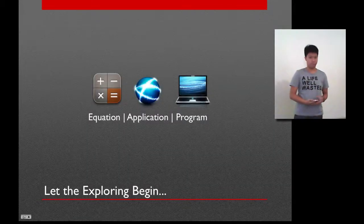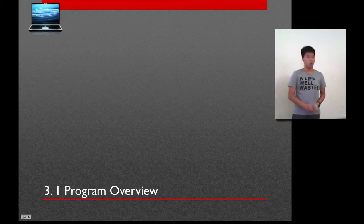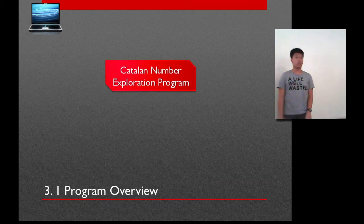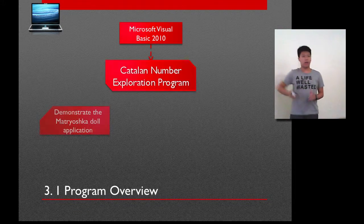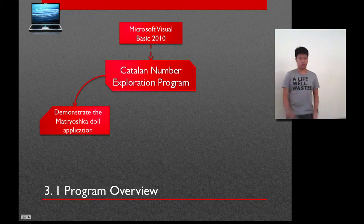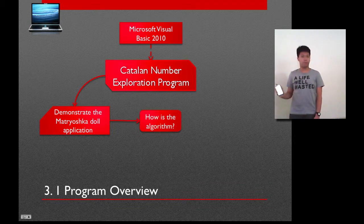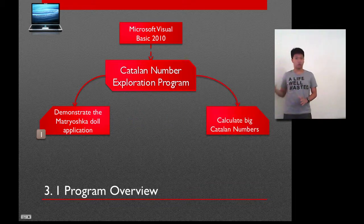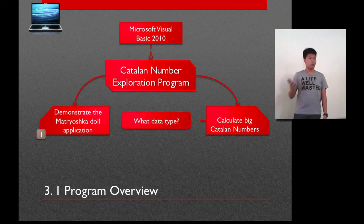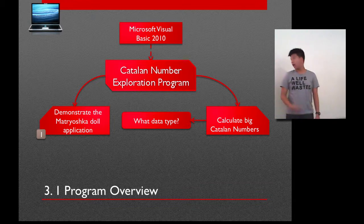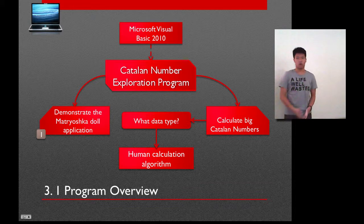Now, moving on to the program. I call this program, the Catalan number exploration program, which I have made using Microsoft Visual Basic 2010. And with this, I wanted to have the program to have the features: one, demonstrate the Matryoshka Catalan application I have shown you before. And if I wanted to do this, I'm going to need to figure out how the algorithm works. And another feature that I wanted to show you here is if I could find big Catalan numbers, which I have to consider about the data type I should use to contain the numbers. And this is achieved by using the human calculation algorithm.